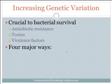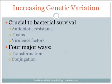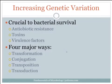There are four main ways that bacteria can increase their genetic variation: transformation, conjugation, transposition, and transduction.